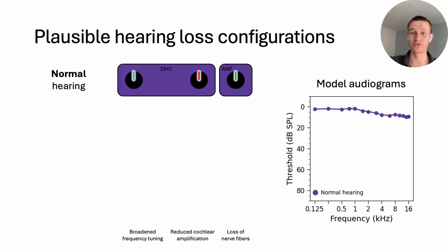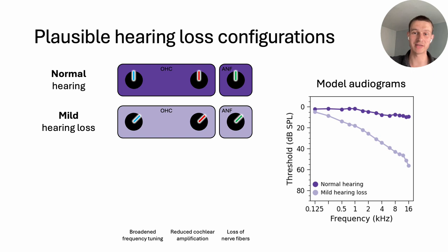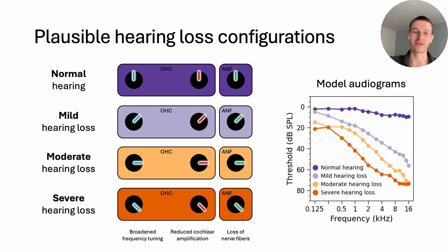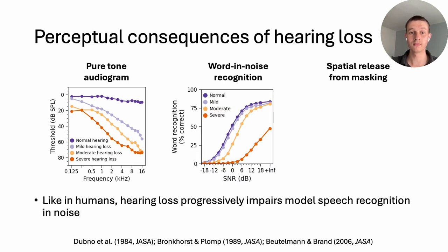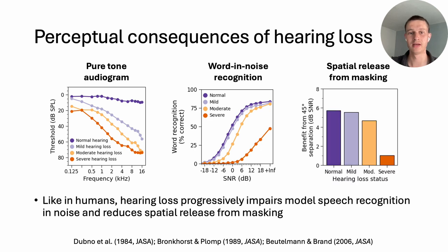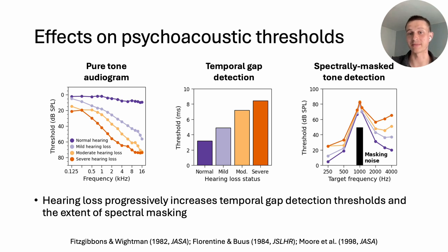The first knob broadens the frequency tuning of the cochlea. The second turns down the cochlear amplification, reducing responses to quiet sounds — so together these first two knobs effectively represent the health of outer hair cells. The third knob controls the number of auditory nerve fibers; we simulate synaptopathy by reducing the number of spike trains in the peripheral representation. We set these knobs to produce plausible hearing loss configurations, turning them proportionally in a frequency-dependent manner to produce audiograms representative of mild, moderate, and severe hearing loss. Like in humans, we find that hearing loss progressively impairs the model's speech recognition performance, particularly in noise, and also progressively reduces spatial release from masking. The model also replicates aspects of hearing-impaired psychoacoustic behavior: hearing loss progressively increases the model's temporal gap detection thresholds and the extent of spectral masking — two perceptual measures thought to quantify temporal and spectral resolution in the periphery.